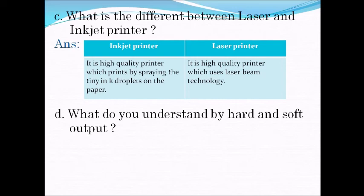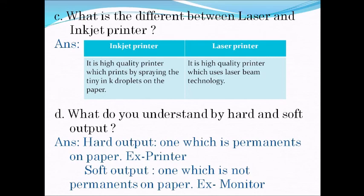Question 4: what do you understand by hard and soft output? The answer is: hard output is output which is permanent on paper — for example, the printer gives hard output. Soft output is output which is not permanent — for example, the monitor always gives soft output on the screen.